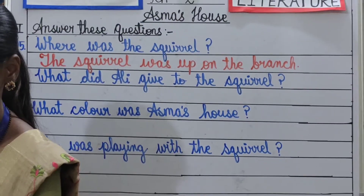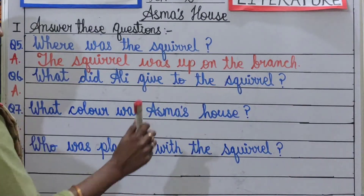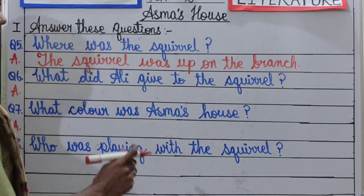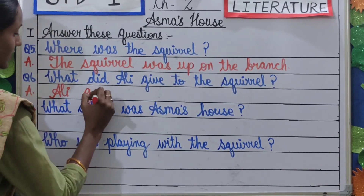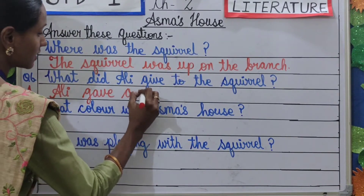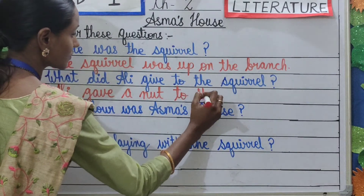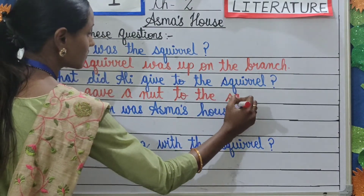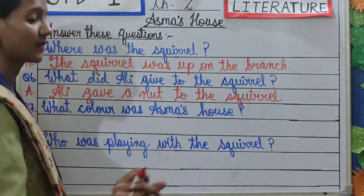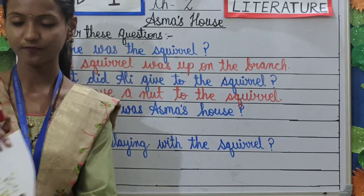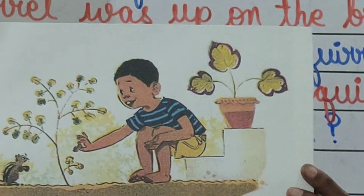Next question. Question number 6: What did Ali give to the squirrel? Ali gave a nut to the squirrel. As you can see in this picture, what is Ali giving? Ali is giving a nut to the squirrel.